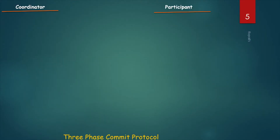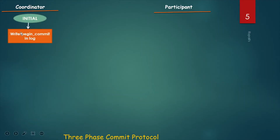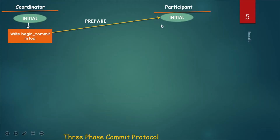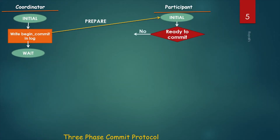Now, the flow of the 3-phase commit protocol. There are two sites: one is the coordinator site and another is the participant site. First, the coordinator initiates the transaction, writes 'begin commit' in its own log, and sends the prepare message to the participant. The participant then initiates its transaction.